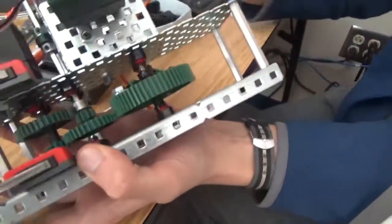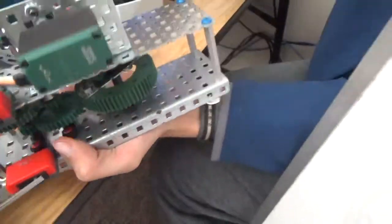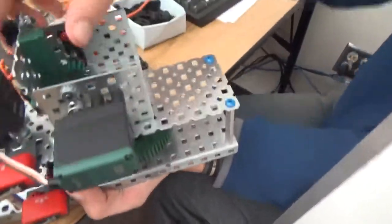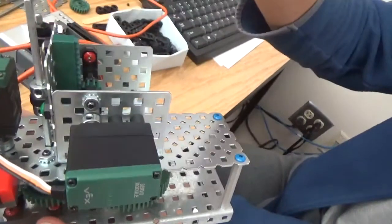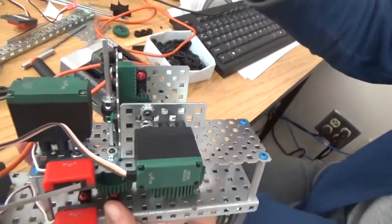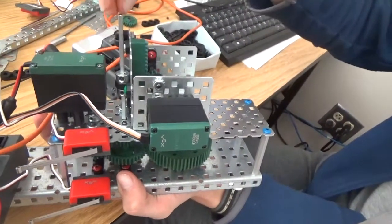This servo here is what shifts the axle up and shifts it back and forth. How it works is the servo will push it up, and then these two axle collars will allow this plate to move up and down, and when that does, it takes the axle with it.